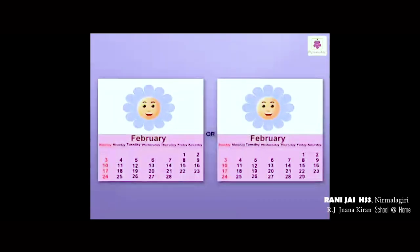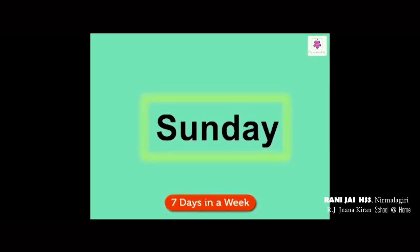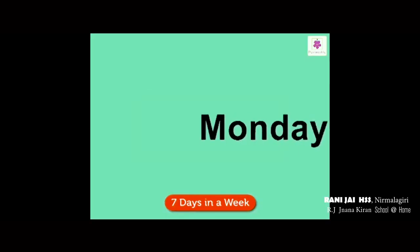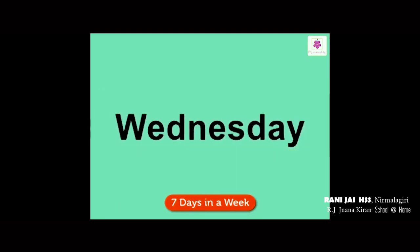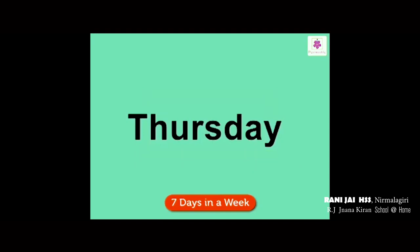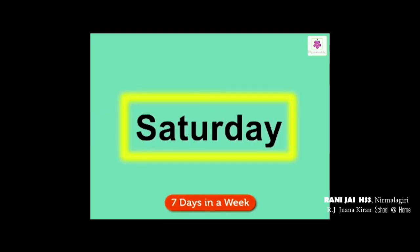Do you know — February is a special month. It has 28 or 29 days. The 7 days of the week are Sunday, Monday, Tuesday, Wednesday, Thursday, Friday, and Saturday.